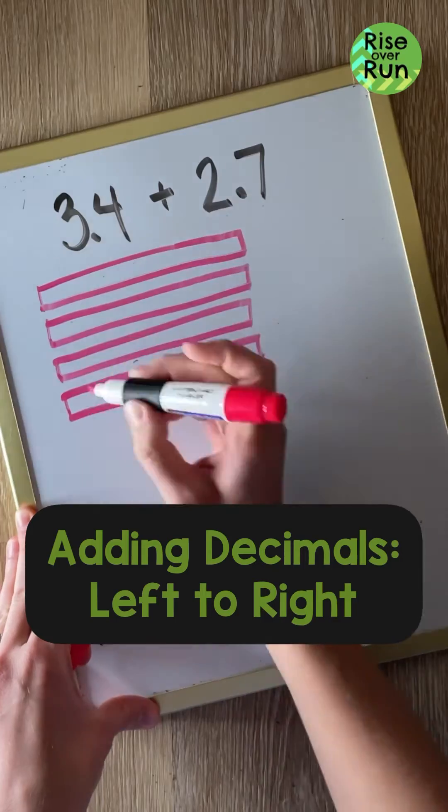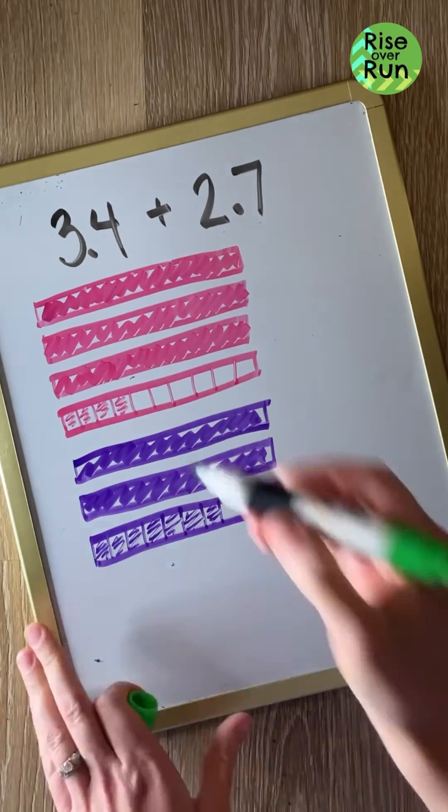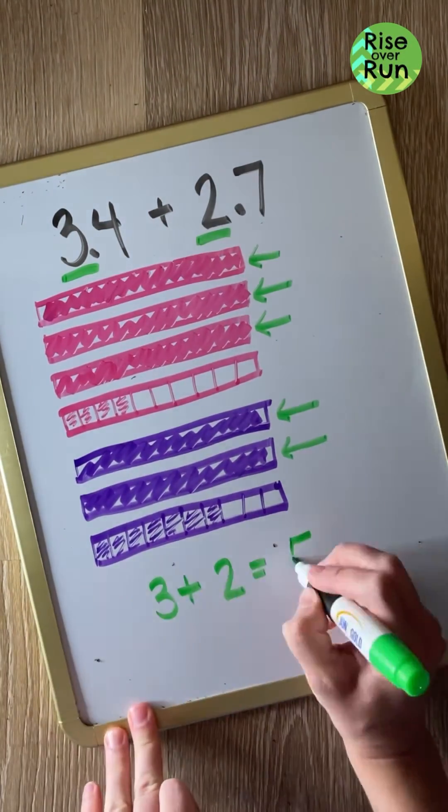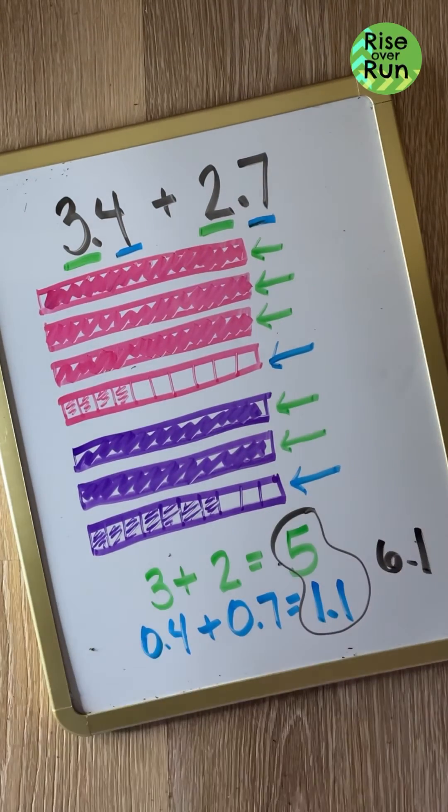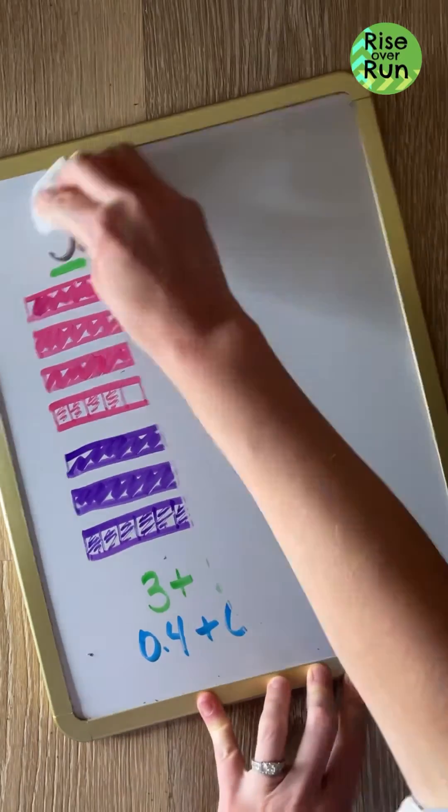Let's add left to right using decimals. 3.4 plus 2.7. First, we look in the ones place and add 3 plus 2 to get 5. And then in the tenths place we add 0.4 and 0.7 to get 1.1. Add those together for a total of 6.1.